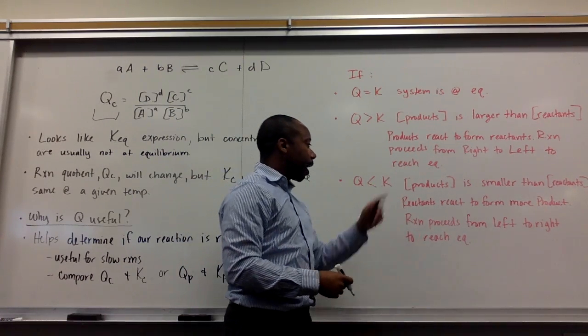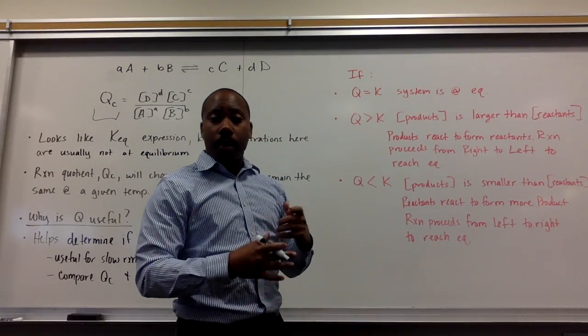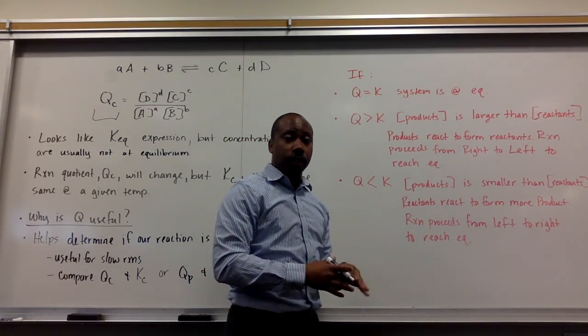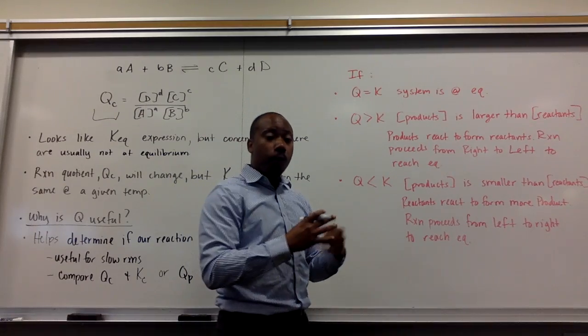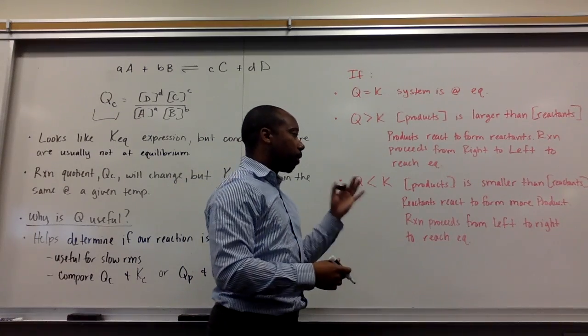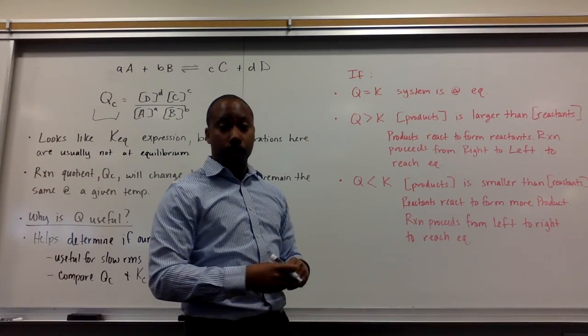And, if Q is less than K, it's the opposite. My products are smaller in their concentrations than my reactants. So, the reactants will react together, forming more products. Thus, my reaction will move from left to right to reach equilibrium.